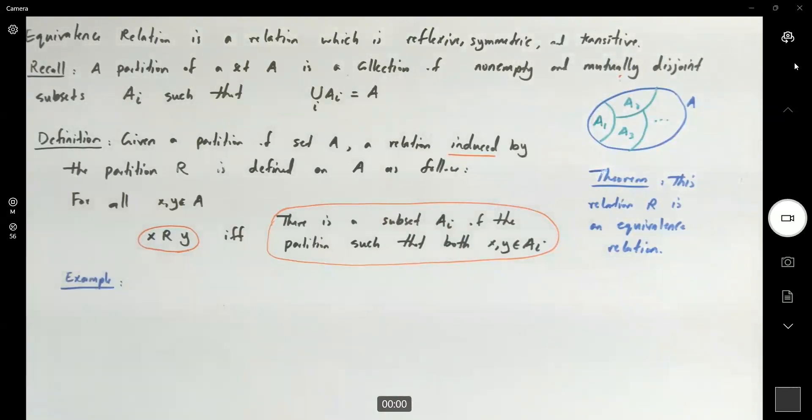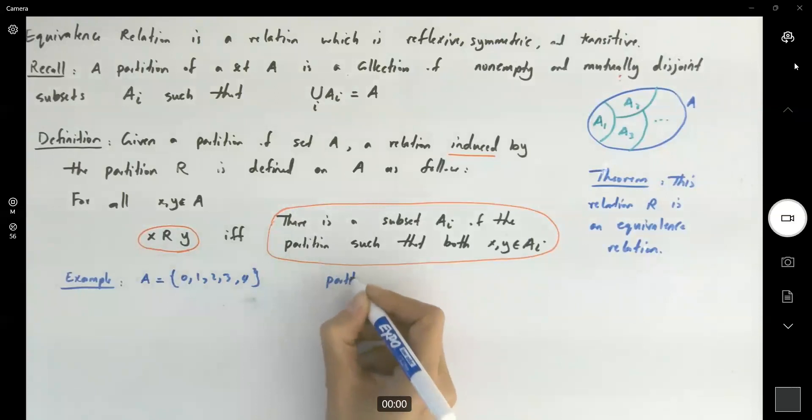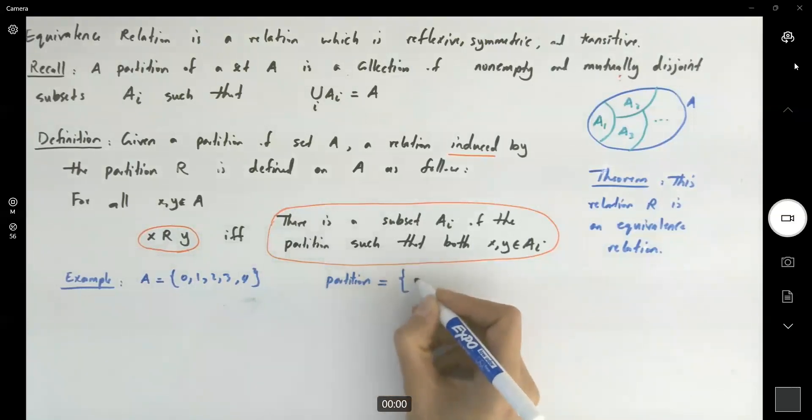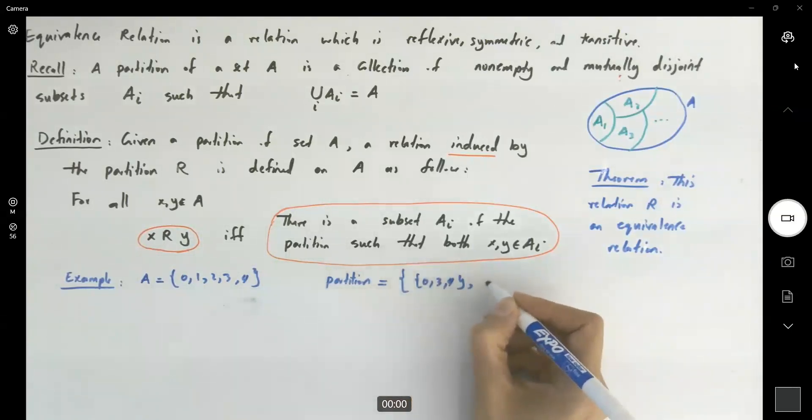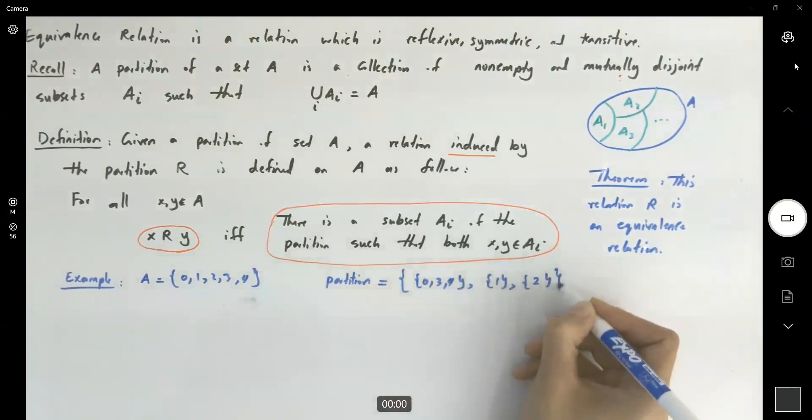Let's cover one example to feel more comfortable about what's going on here. Suppose I give you a set like A as follows: I have 0, 1, 2, 3, and 4. And I'm going to give you a partition as follows with the following subsets. The very first one is {0, 3, 4}. The second one is {1}. And the third one is {2}. It is a partition for this set.